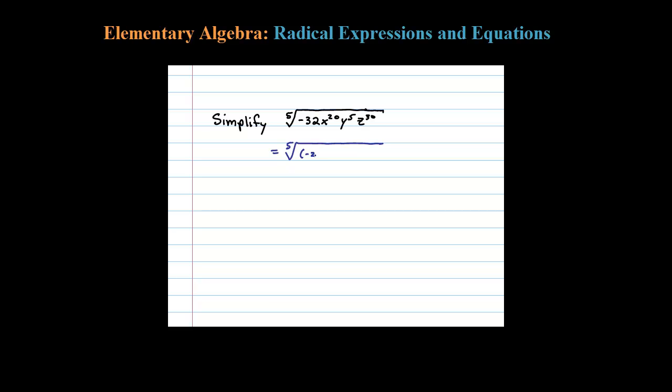I'll rewrite that as negative 2 to the fifth, x to the 20th, y to the fifth, z to the 30th. Now it's easier to work with the prime factorization like that, because the fifth root of negative 2 to the fifth...